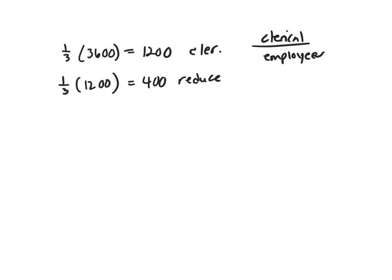So that means my total number of employees now is 3,600 minus 400, which is 3,200. That's how many employees I have. So I'm trying to find the denominator with 3,200.